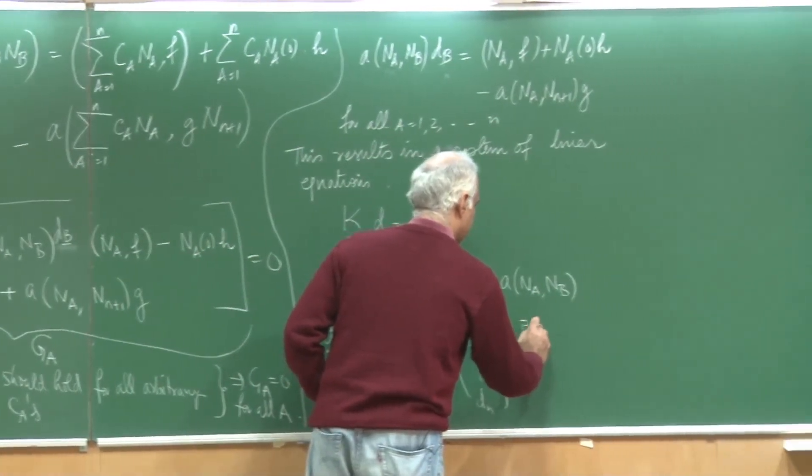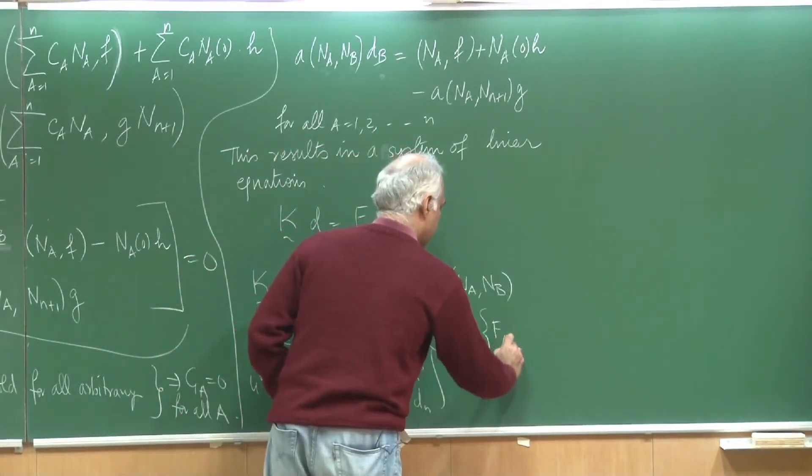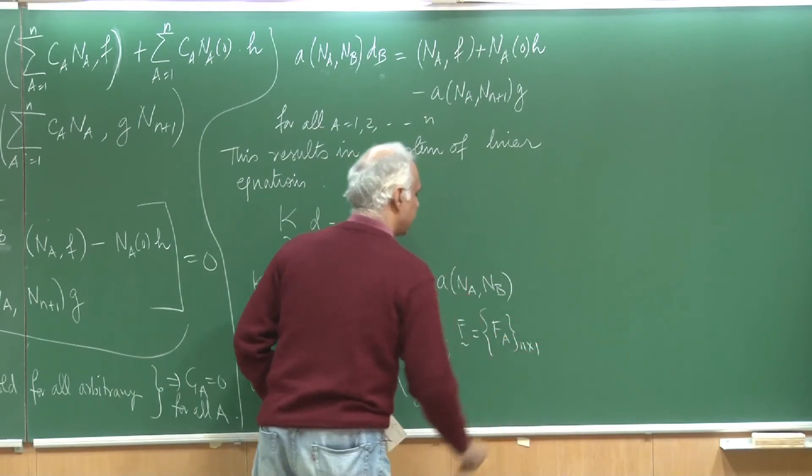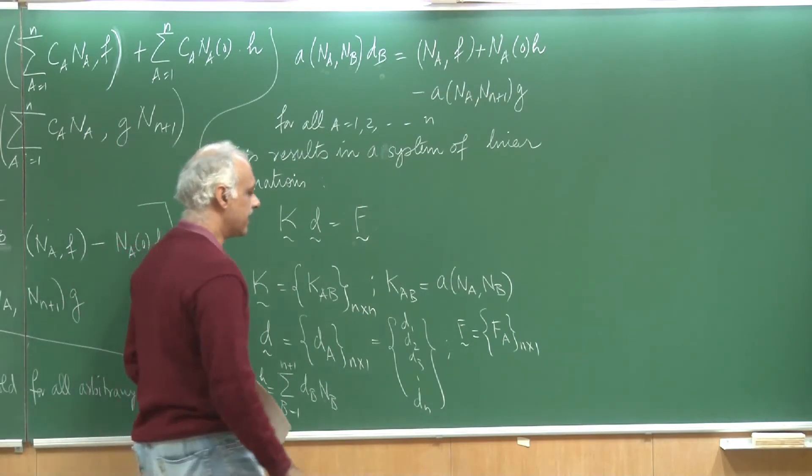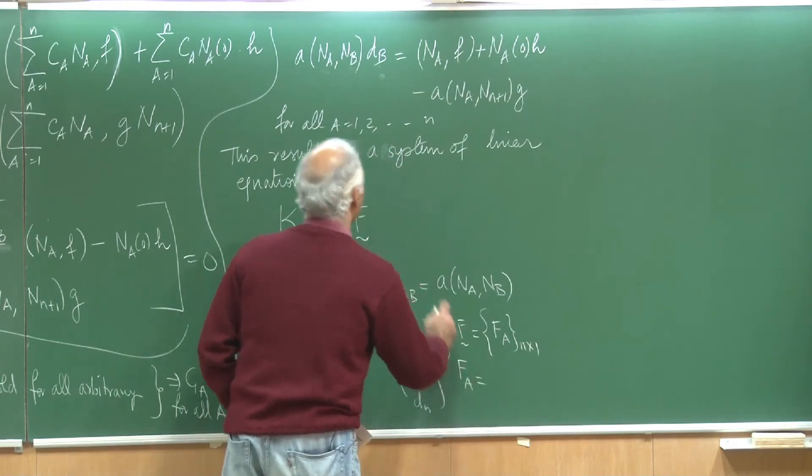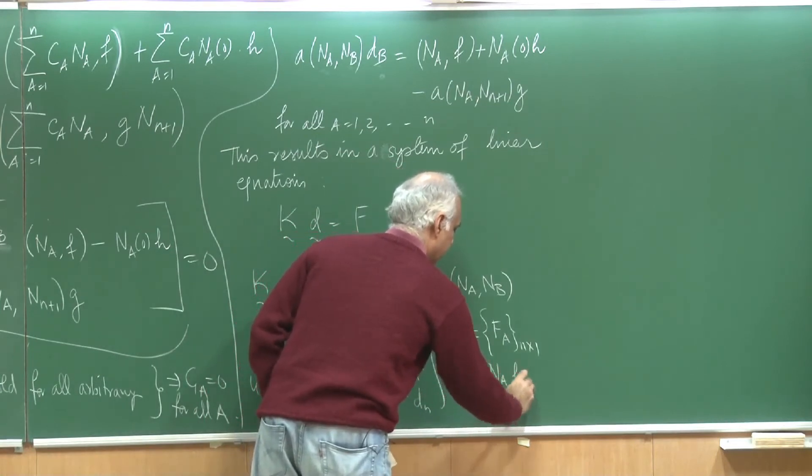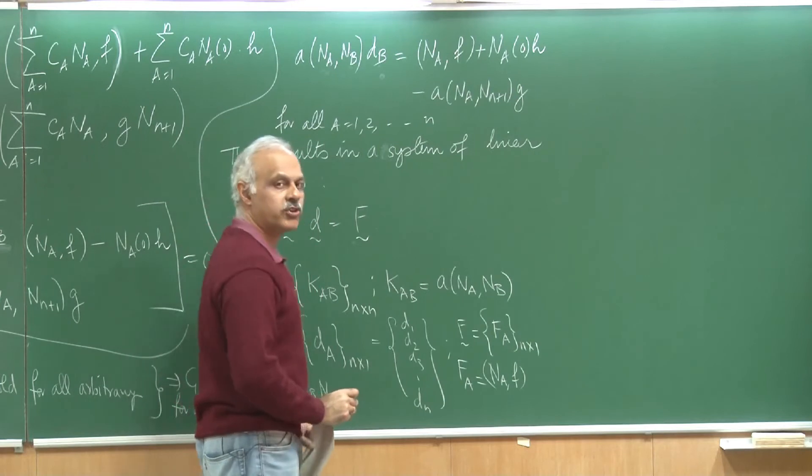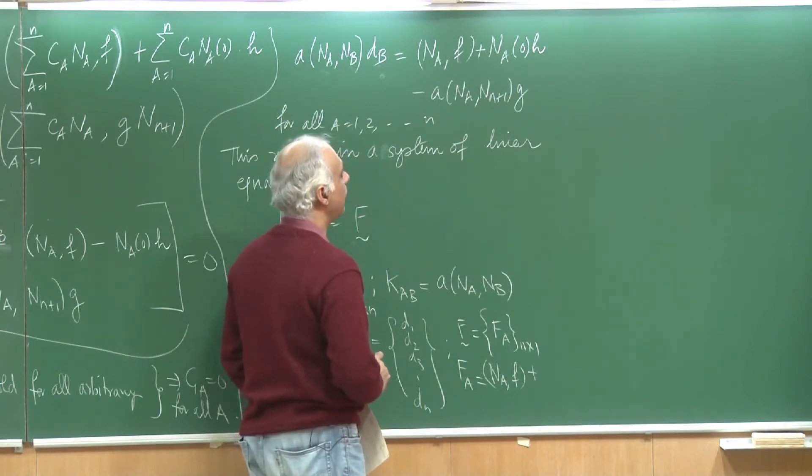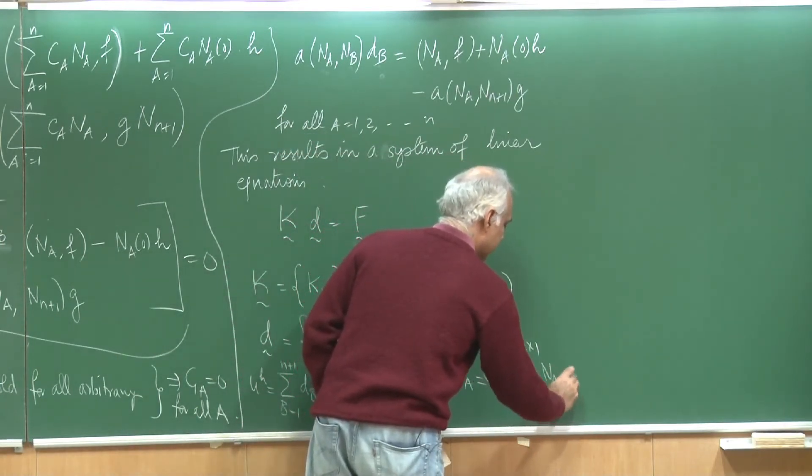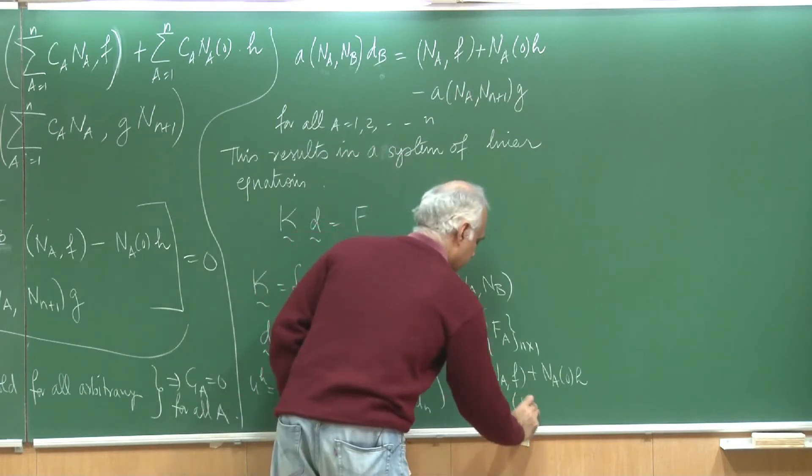F is the force vector, the right hand side, and this consists of these quantities f_a. This is also of the size n cross 1, n rows only one column and a typical f_a is actually all this quantity on the right hand side. That is n_a comma f, that is from the applied force, then I have a contribution from the Neumann boundary condition or the natural boundary conditions, and finally I have a contribution from the Dirichlet boundary condition.